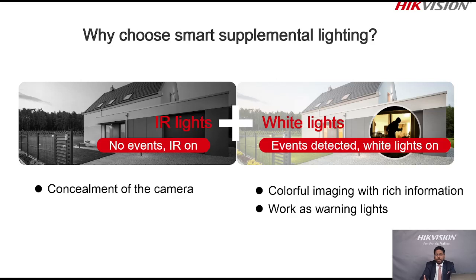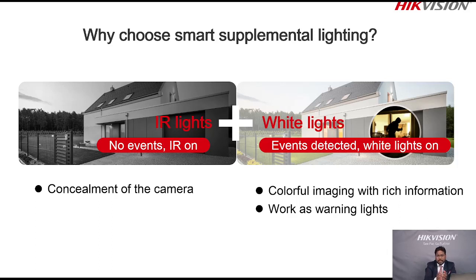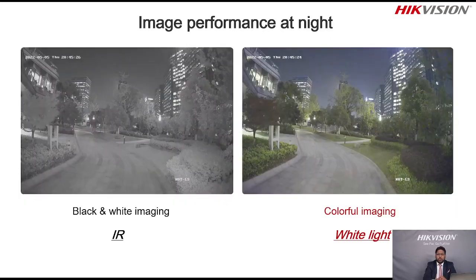When there is no event, the camera works in IR mode. When any event, human, or activity is detected, the camera starts giving white supplemental light so you can capture colorful, detailed information. It also works as a warning light — so you get both a warning signal and a bright, clear color image captured by the camera.